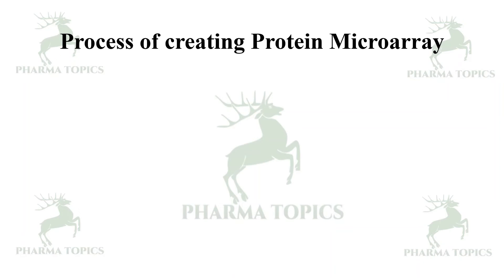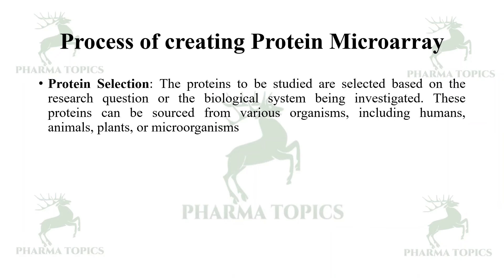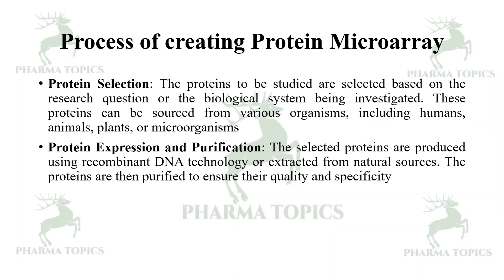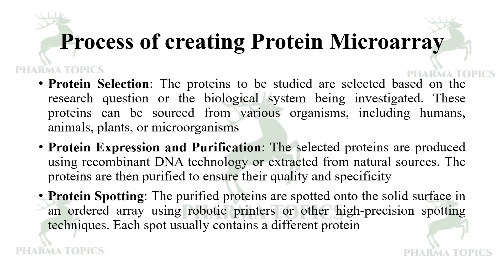The process for creating a protein microarray begins with protein selection: proteins to be studied are selected based on the research question or biological system being investigated, and can be sourced from humans, animals, plants, or microbes. Next is protein expression and purification: selected proteins are produced using recombinant DNA technology or extracted from natural sources, then purified to ensure quality and specificity.